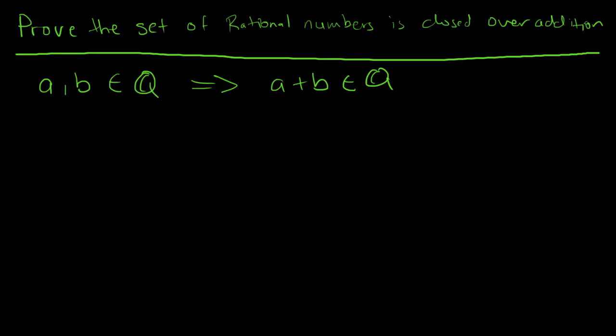One given that we have is basically in the definition of the rational numbers. If A is an element of the rational numbers, then A can be represented as a fraction, or a ratio P over Q, where P and Q are elements of the integers.